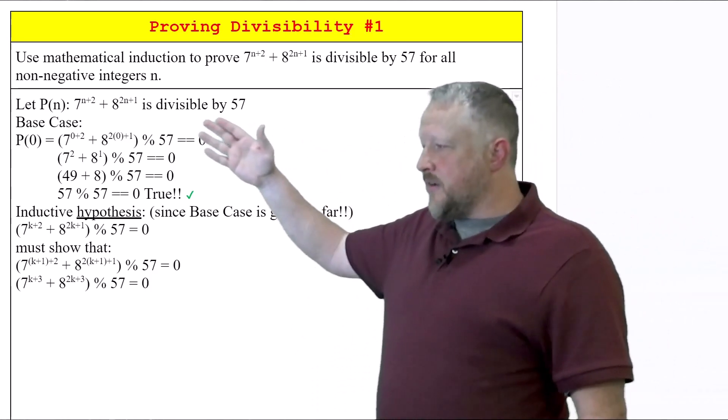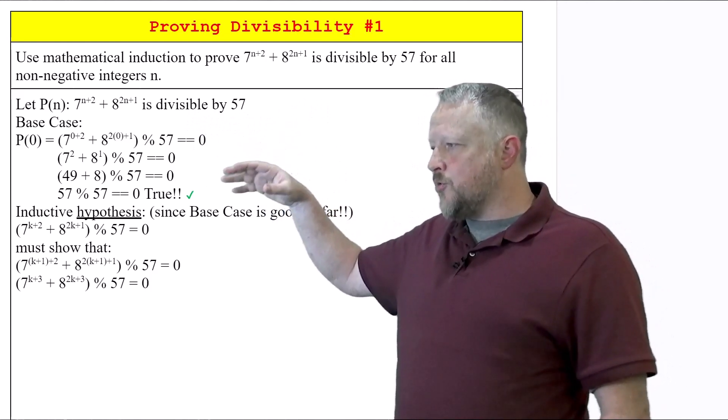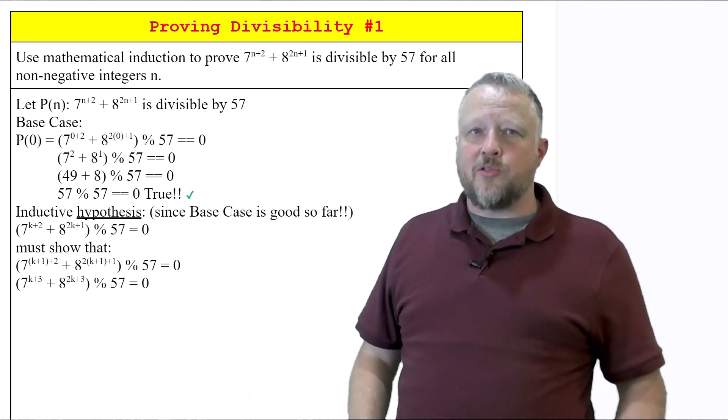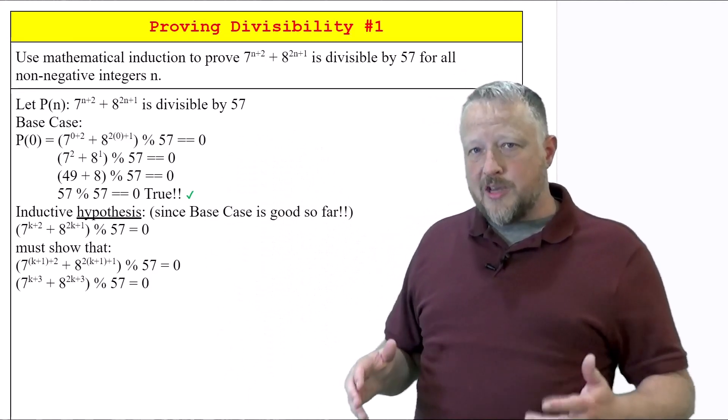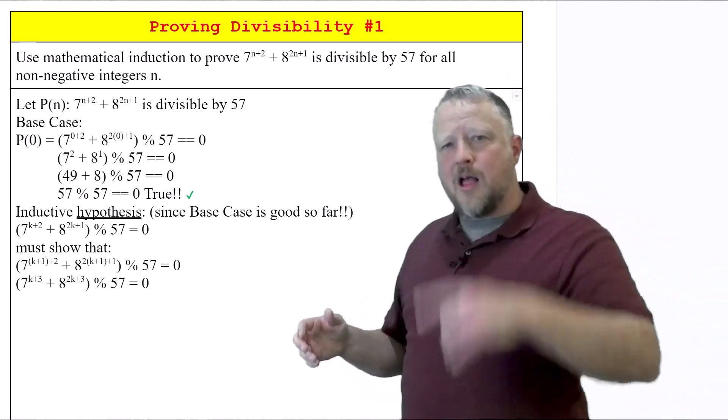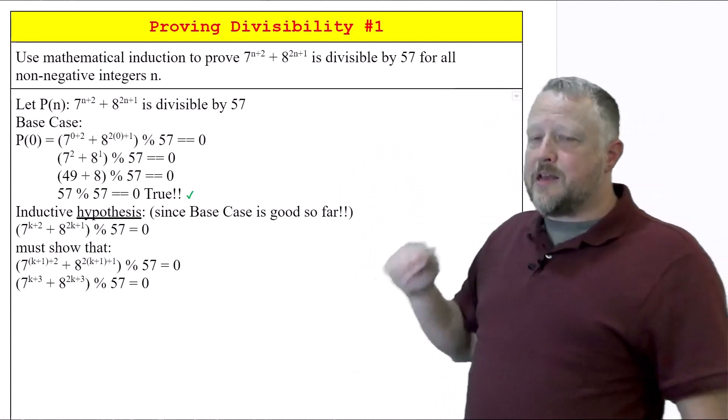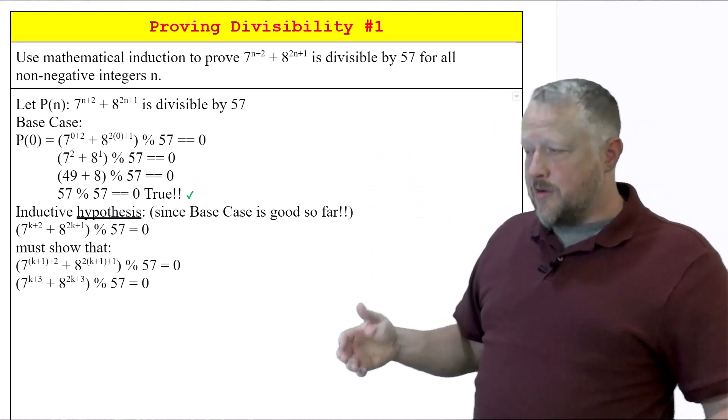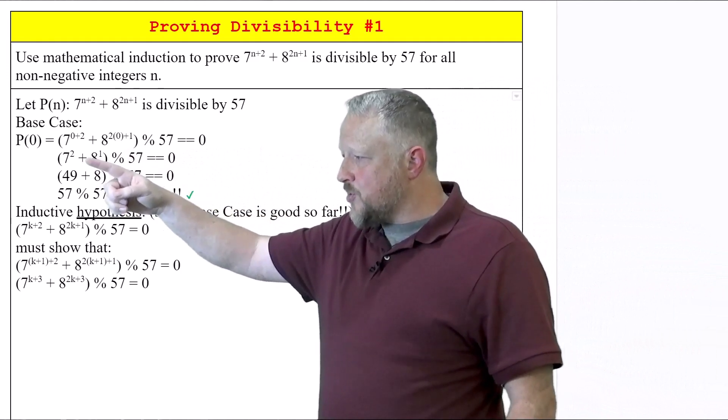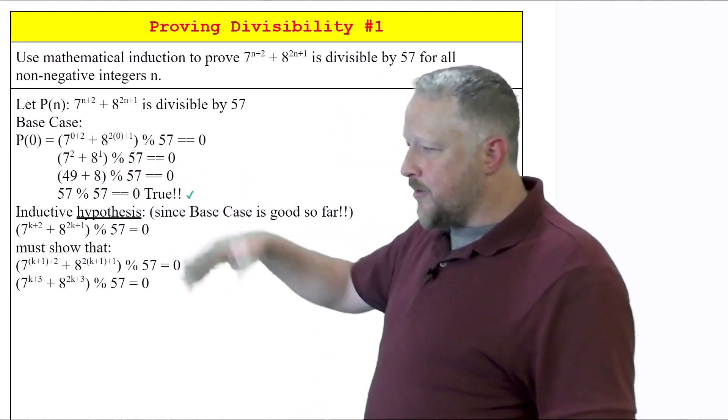So let P(n) equal what we just had. Our base case, we're allowed to use non-negative integers. So in reality, it could have actually used zero in this one. The lowest non-negative integer is actually zero, so that's why we're doing that. We go ahead and place in zero and all the powers, and we have 1 to the square plus 8 to the first, which is still 49 plus 8, and there it is.